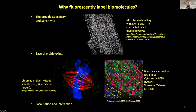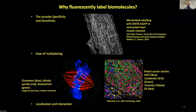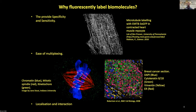You can also label in tissues. Here we've got a breast section labeled with four colors: DAPI in blue, cytokeratin in green, vimentin in yellow, and the ER in red. This allows you to see where different components of the tissue are lining up to help that tissue function, and it allows you to look at localization and interaction — whether things are close together and could be interacting.